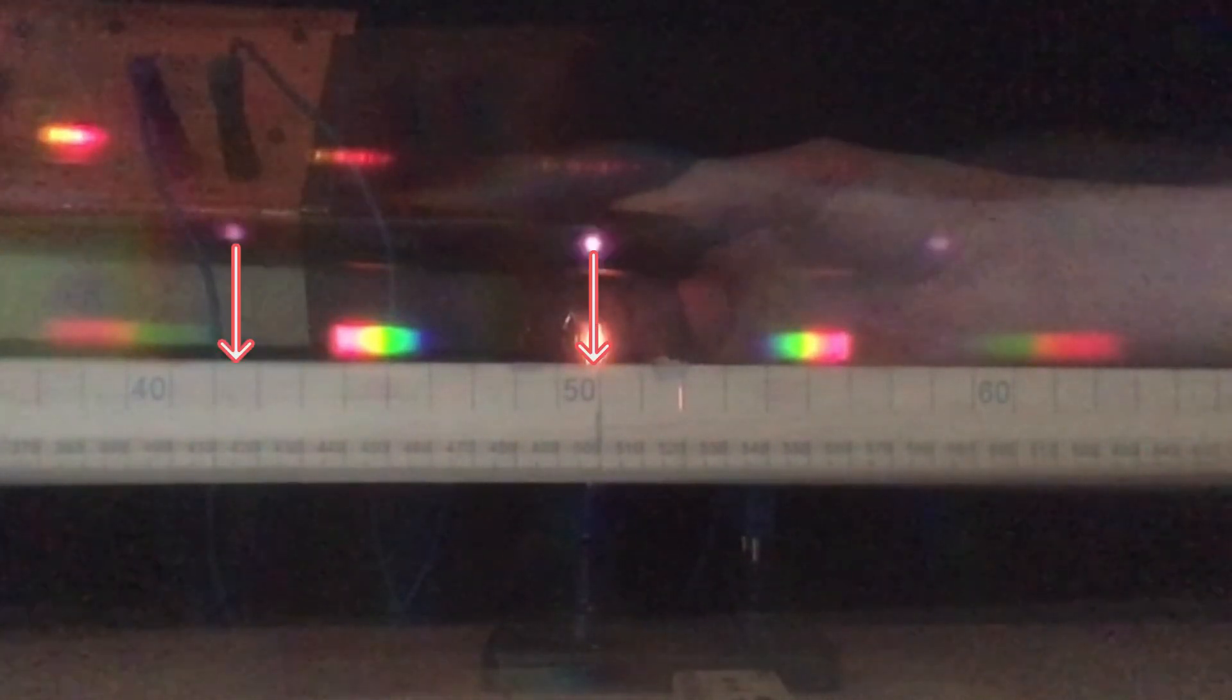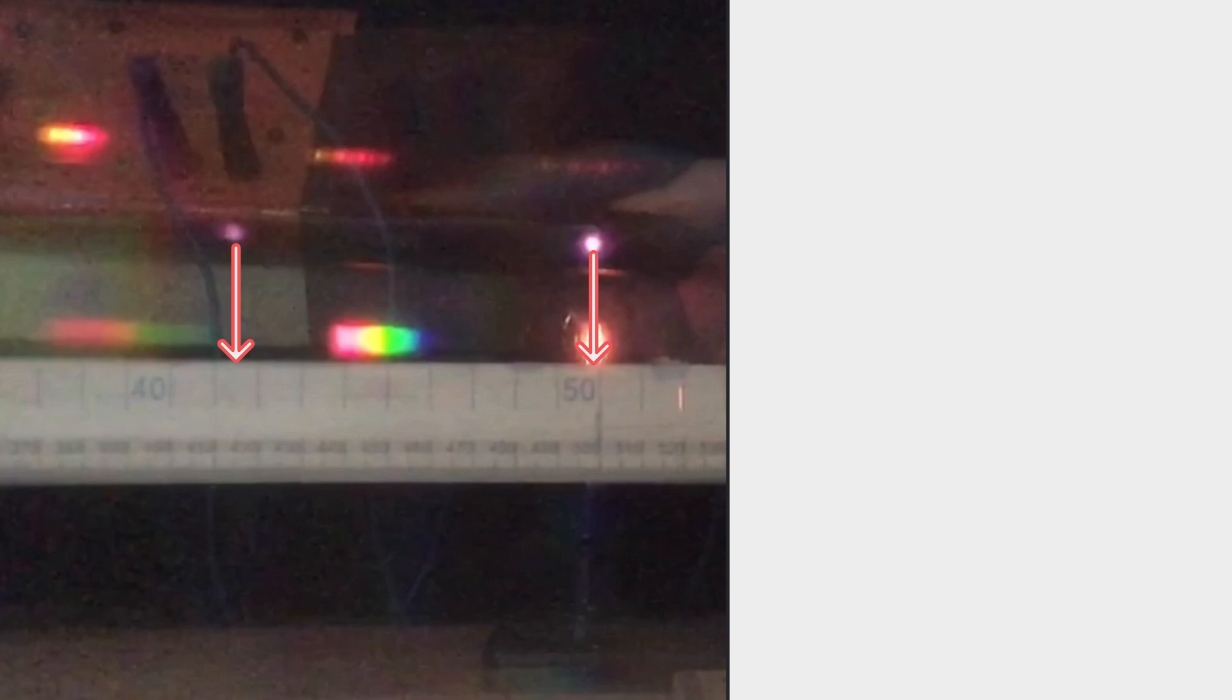I can see that the first order fringe over here is approximately one, two, three, four, five, six, seven...